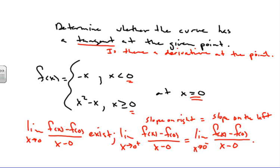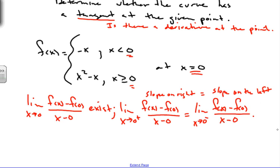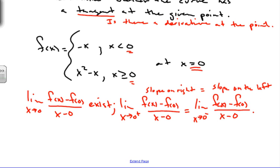Now how do we do that? First, let's look at the graph. We're going to graph this piecewise function. For the first part, we have negative x, which is a line starting at zero. I'll put an open circle at zero and it goes down — plugging in negative 1 gives positive 1, so the graph goes like this for x less than 0.